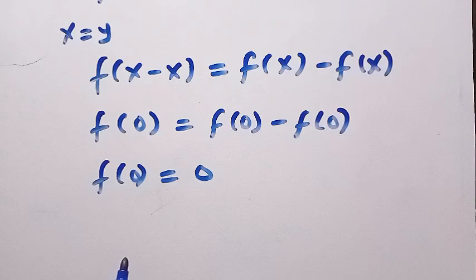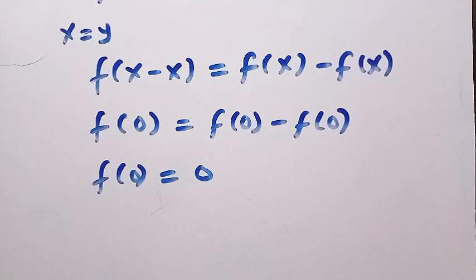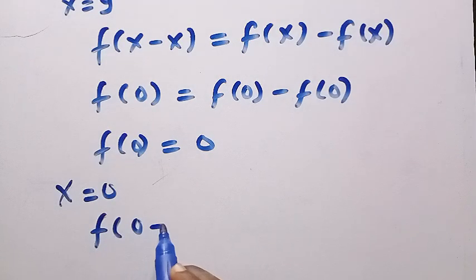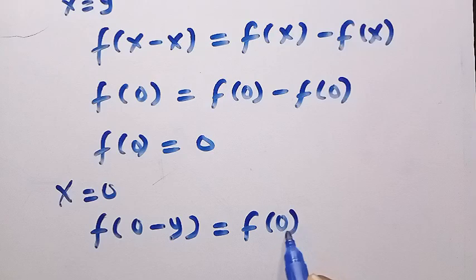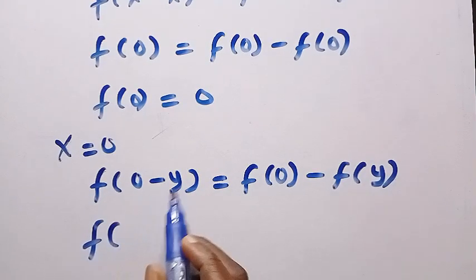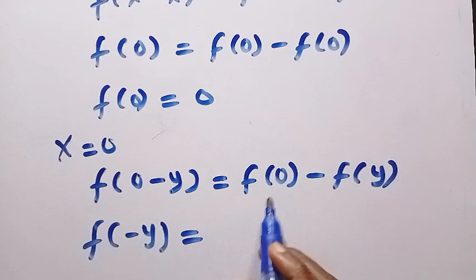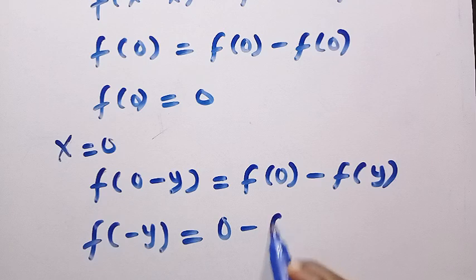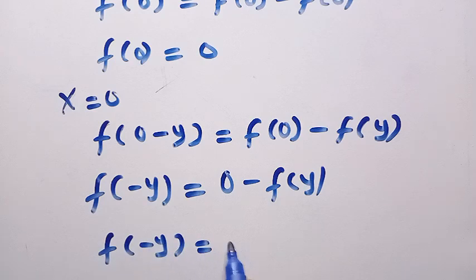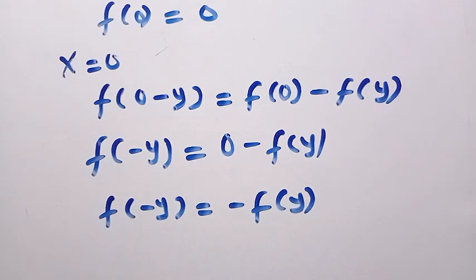If we test for oddness — so we test with x and y both being the same number, like x is 1 and y is 1. But to test for oddness, suppose we let x equal 0. If x equals 0, therefore we are going to have f of 0 minus y equals f of 0 minus f of y. Here we have f of 0 minus y, which gives us f of minus y. And since f of 0 has been shown to be 0, this equals minus f of y.